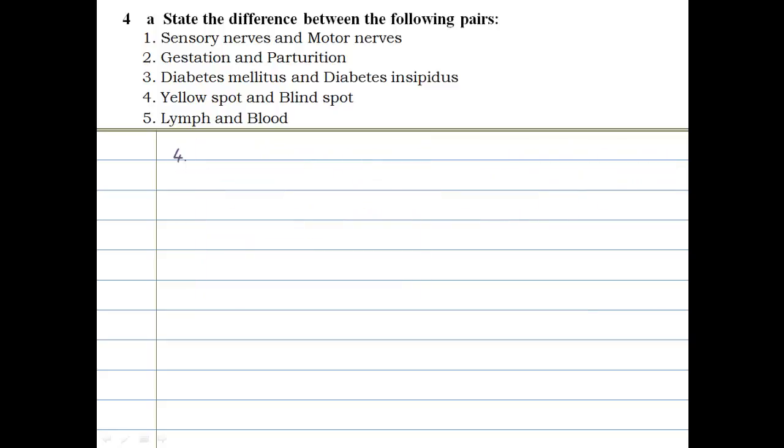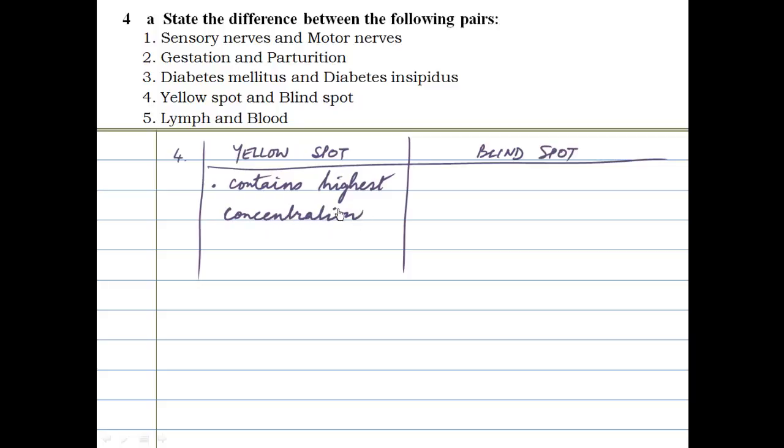Number 4, that is the yellow spot and the blind spot. Again, we've not been told what exactly the differences should be based on. We could talk about in terms of position, or I'm going to be talking about in terms of what it contains. Contains highest concentration of cones.